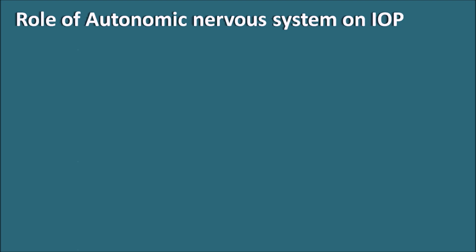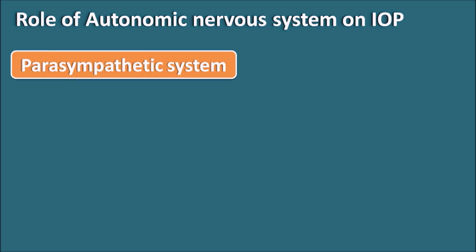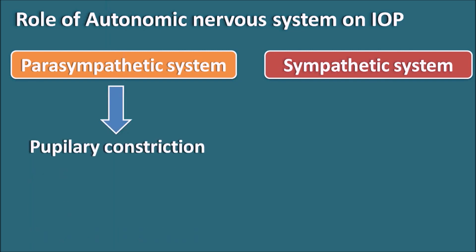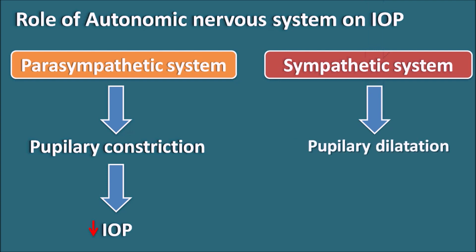First, let us see the role of the autonomic nervous system on intraocular pressure. The autonomic nervous system has two divisions: the parasympathetic system and the sympathetic system. The parasympathetic system mainly produces pupillary constriction, which results in decreased intraocular pressure, mediated by M3 receptors. On the other hand, the sympathetic system produces pupillary dilation, acting through alpha or beta receptors, resulting in increased intraocular pressure. Therefore, a goal in treating Glaucoma is to stimulate the parasympathetic system and inhibit the sympathetic system.